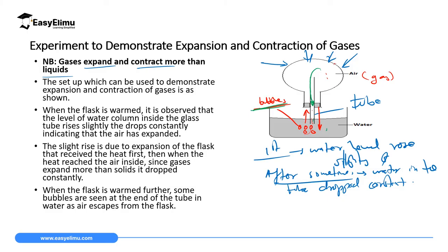Since gases expand more than solids, the air will expand greatly and occupy a larger volume. That large volume is what pushes the water down inside the delivery tube. If the gas is in excess it will escape as bubbles from the water in the beaker. So water rises slightly because the flask gained heat first and expanded; then the air acquires heat, expands more, pushes water downwards, and forms bubbles.